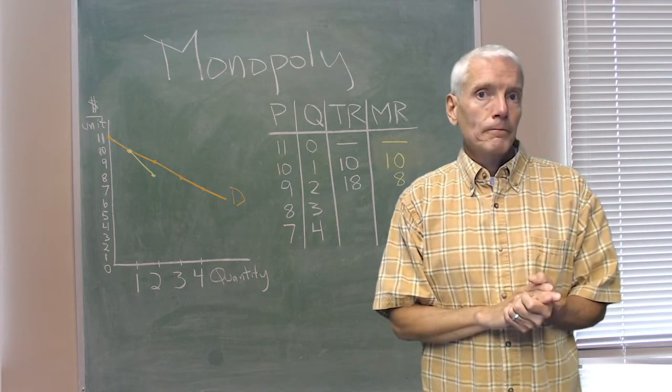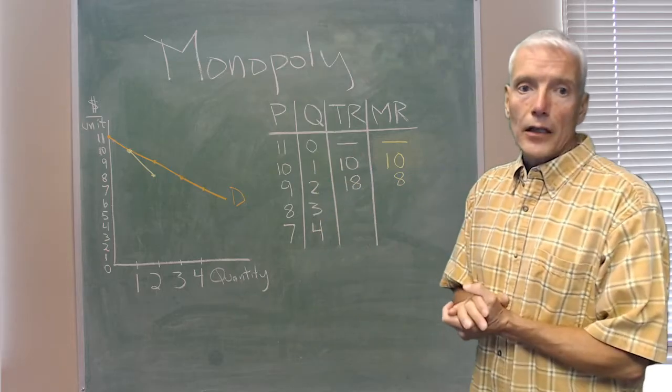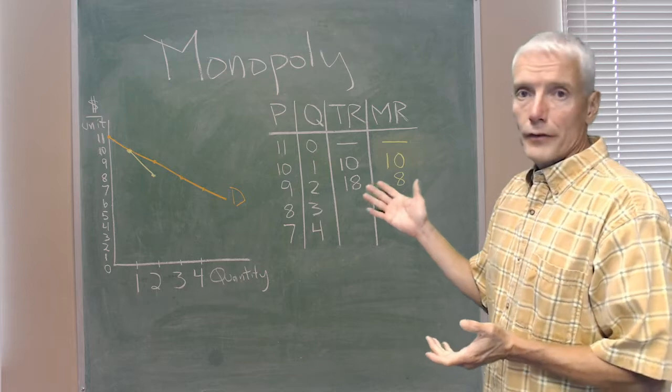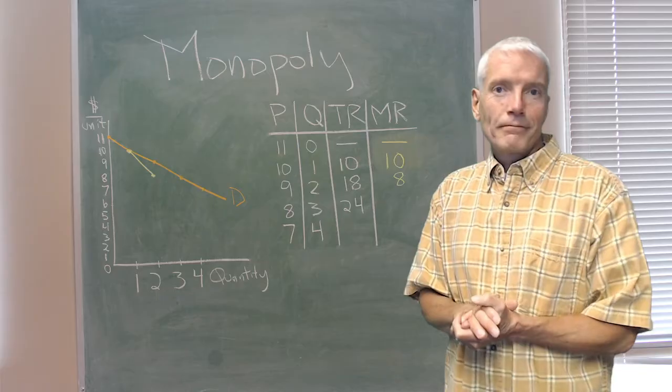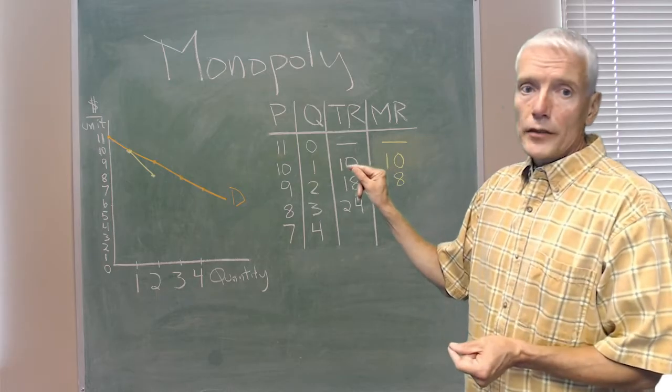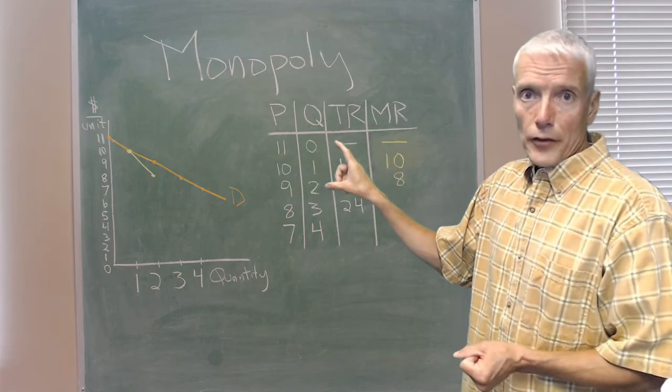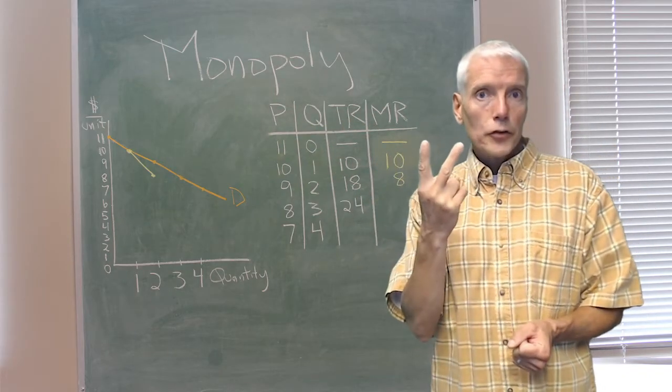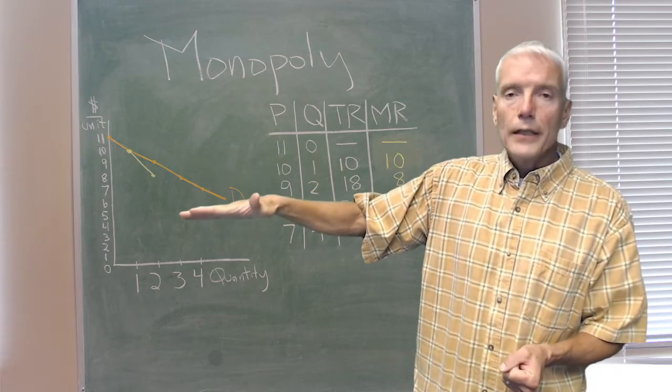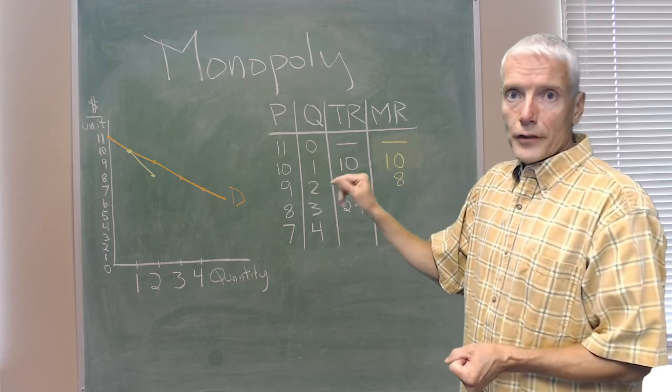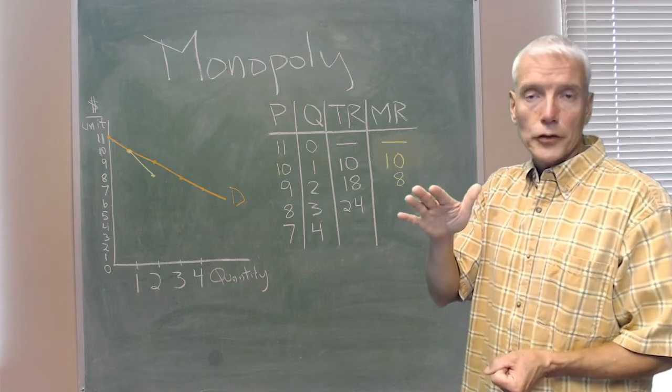Now let's look at the third unit. In order to sell 3, it has to lower its price to $8. Total revenue is $24. What's its marginal revenue? It's not the price, not the price of $8. It got $8 for that third unit, but it lost $1 each on those other two units that it could otherwise sell for $9. Now it's selling it for $8. So marginal revenue is the $8 price minus $2 that it lost on those first two units.